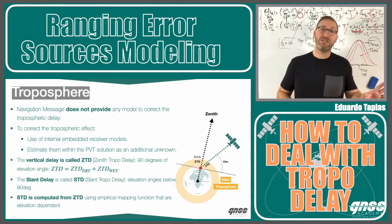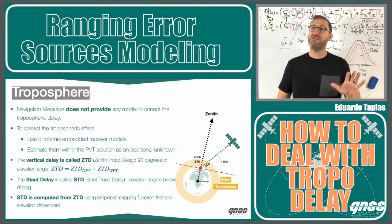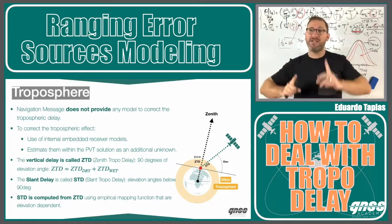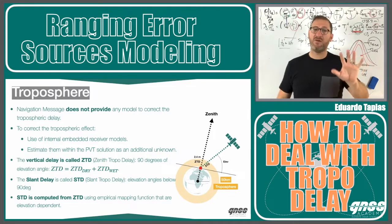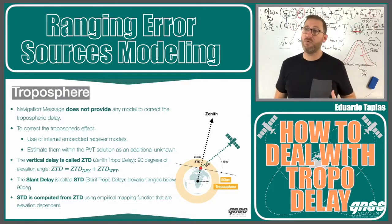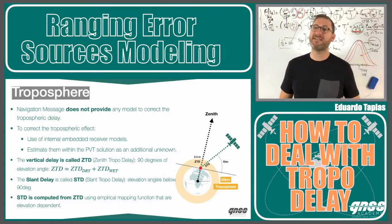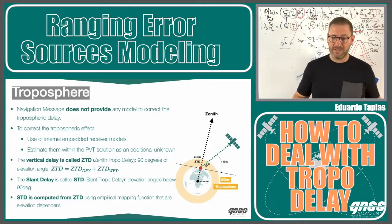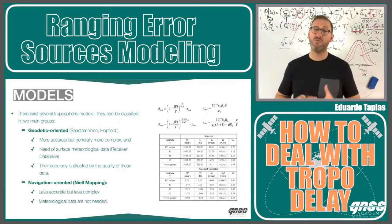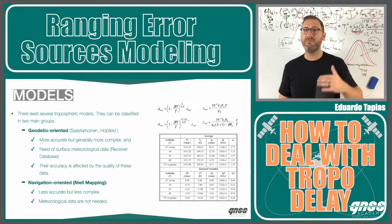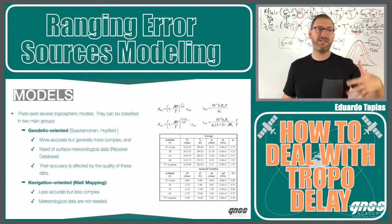We have two components: the hydrostatic component and the wet component. 90% of the delay is the dry component, and 10% is the wet component. So in 2.4 meters of zenith delay, 90% is dry and the rest is wet. The hydrostatic component is very predictable with models, but the wet component is not, because it depends on local water vapor and weather. In the market, we have different models such as geodetic-oriented ones like the Saastamoinen-Hopfield model, or navigation-oriented ones like the Neil mapping function.